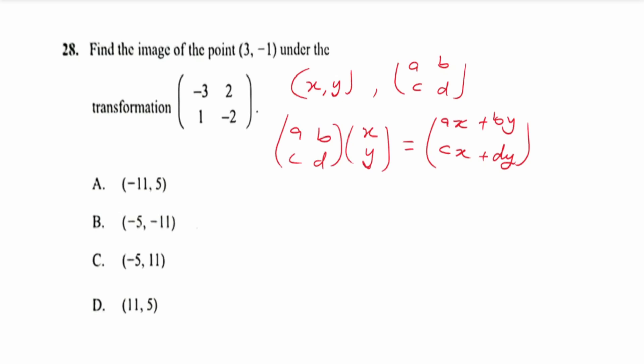So this row multiplies the column, and then this row multiplies the column. To write this as a point, it gives us ax + by as the x coordinate and then cx + dy as the y coordinate.